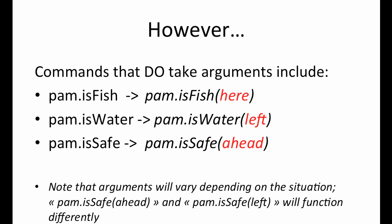That being said though, many commands take arguments, such as the pam.isfish, pam.iswater, and pam.issafe commands shown here. pam.isfish here would check if there's a fish at Pam's current location, pam.iswaterleft would check if there's water to the left of Pam, and pam.issafeahead would check if there are any obstacles that could be harmful to Pam in Pam's current direction ahead.